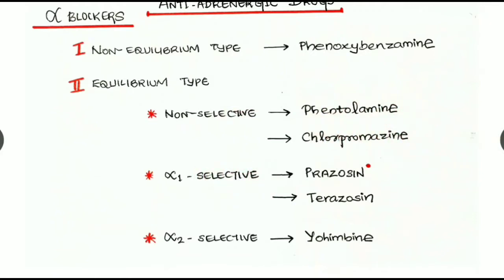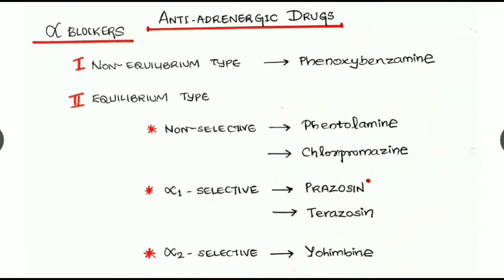Alpha-1 selective example is prazosin, which is an important drug, then terazosin. Alpha-2 selective is yohimbine.